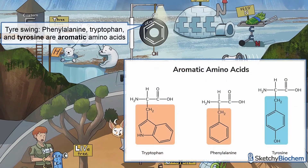Let's take a look at that tire swing more closely. That's tyrosine, the final of the three aromatic amino acids. As we discussed earlier, tyrosine can be made from phenylalanine. It's a precursor to melanin, thyroxine, and the catecholamines dopamine, norepinephrine, and epinephrine.